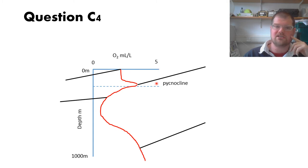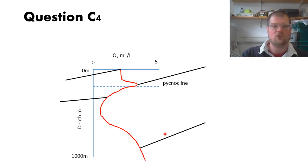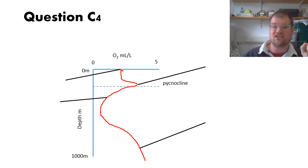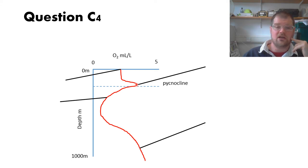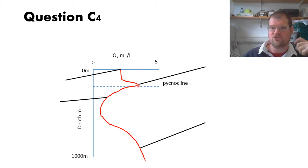The key things I was looking for: there's a concentration at the surface that doesn't go to zero, because there's exchange between the atmosphere and the ocean. There's a local maximum of oxygen near the bottom of the mixed layer, just above the pycnocline, and that's due to oxygen being produced by photosynthesis.